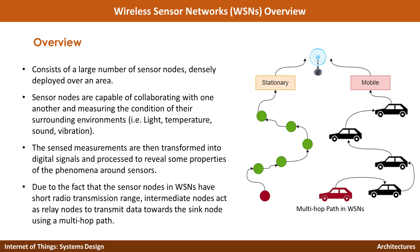Typically sensor nodes have limited short range transmission capability. Therefore most of the time they communicate or transfer data through a multi-hop path approach, where they send data from one node to another until it finds a station with long range communication capability. As shown in the figure, different cars each represent a sensor node, and data passes from car to car until it finds a base station or mobile device that can send the data to the cloud.